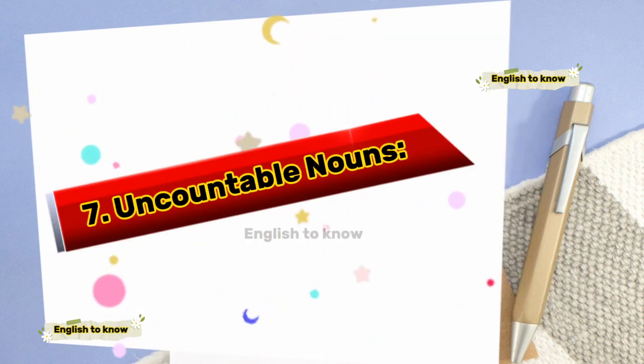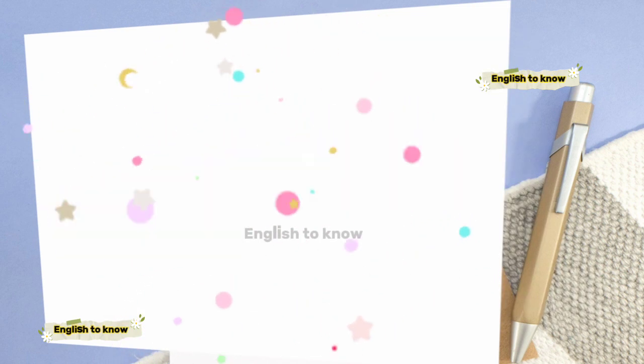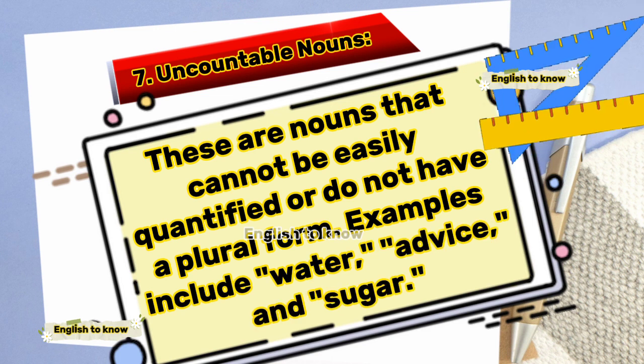Uncountable nouns are nouns that cannot be easily quantified or do not have a plural form. Examples include water, advice and sugar.